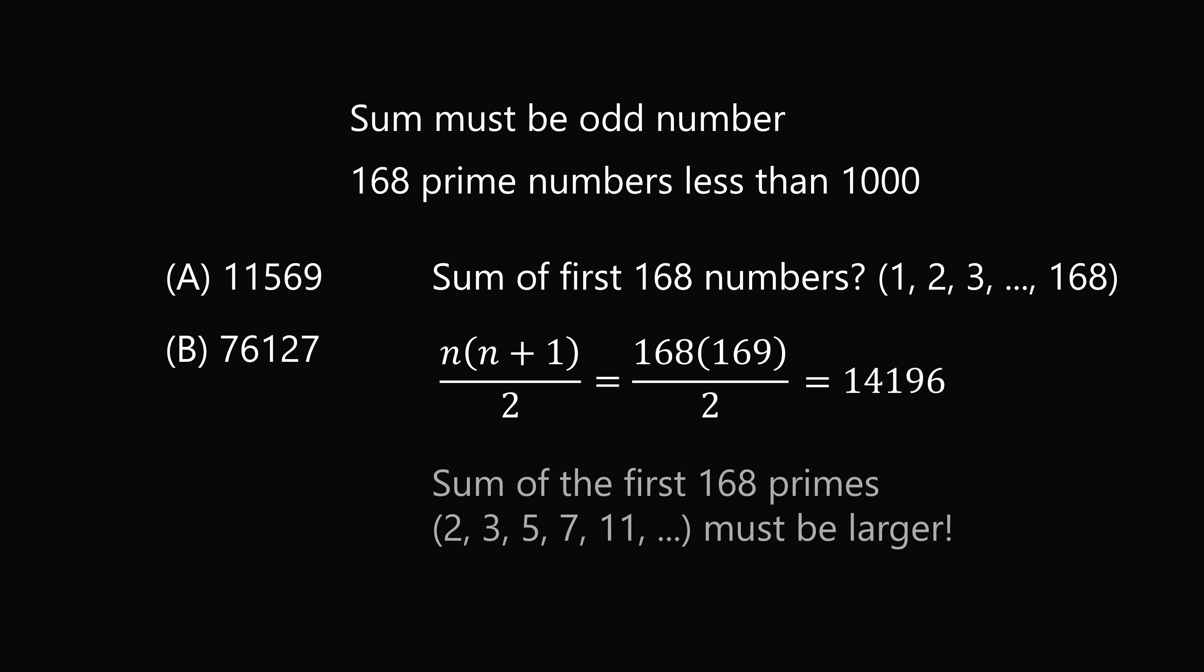Now the first few prime numbers are 2, 3, 5, 7, and so on. And we can see the first prime number is greater than 1, the second prime number is greater than 2, and so on.